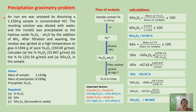Here is the problem. An iron ore was analyzed by dissolving a 1.1324-gram sample in concentrated hydrochloric acid. The resulting solution was diluted with water and the resulting ferric ion was precipitated as hydroxide by the addition of ammonia. After filtration and washing, the residue was ignited at high temperature to give 0.5394 grams of pure ferric oxide. Calculate percent ferric oxide, percent iron, and percent ferrosopheric oxide in the sample.